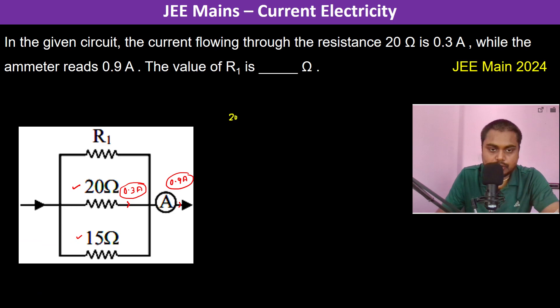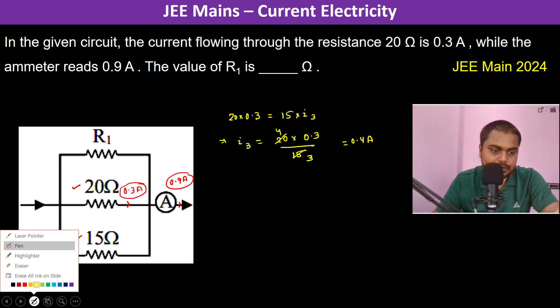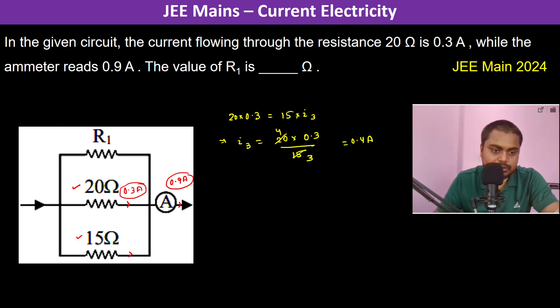Therefore, I can write 20 × 0.3 = 15 × I₃. So I₃ becomes 20 × 0.3 divided by 15, which gives 0.4 ampere. The current flowing through the 15 ohm resistor is 0.4 ampere.